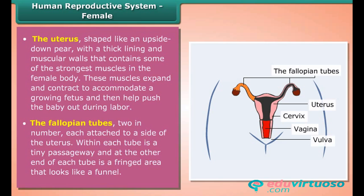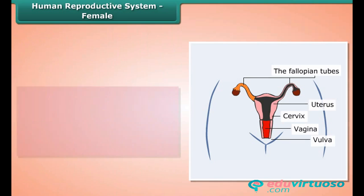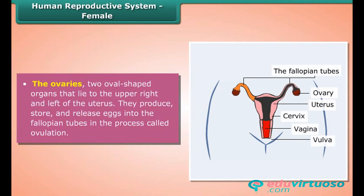At the other end of each fallopian tube is a fringed area that looks like a funnel. The ovaries are two oval-shaped organs that lie to the upper right and left of the uterus. They produce, store, and release eggs into the fallopian tubes in the process called ovulation.